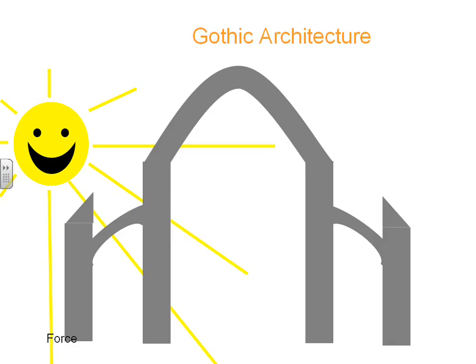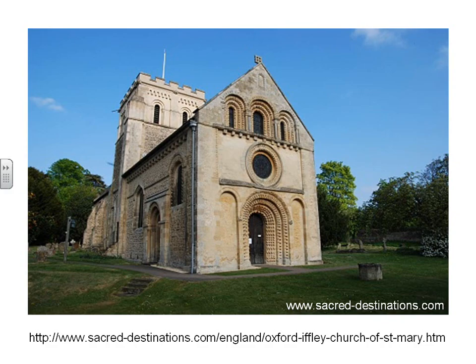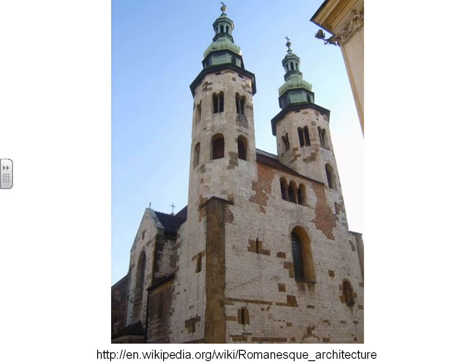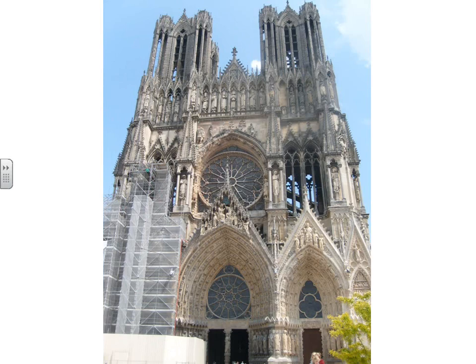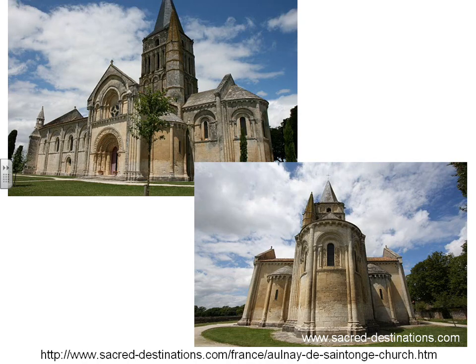So let's check for understanding. What type is this architecture? Notice the rounded arches and not very many windows at the bottom — the windows are normally up at the top. So that's Romanesque. Now this church looks a little bigger, but again check for the number of windows at the bottom. Are they pointed or rounded? They're rounded, so this is Romanesque. Now here we see bigger windows at the bottom and they're arched, so this is Gothic architecture. Notice the rounded arches again — so we know this is Romanesque.